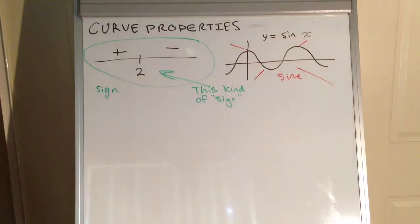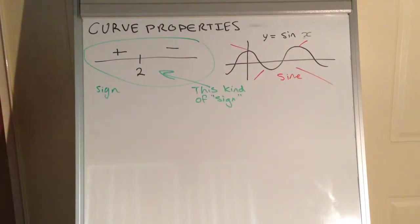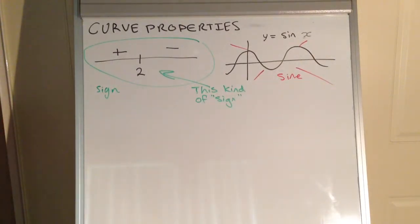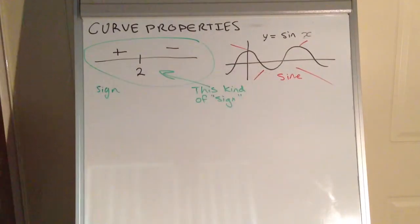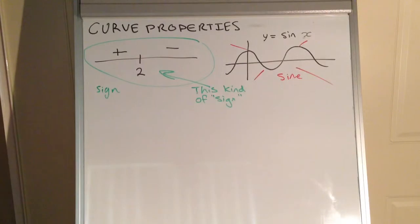Hello everyone. In today's episode we will be looking at curve properties, and this will be spread out over multiple episodes, but we're going to get started on some of the fundamental basics today. We're going to be looking at sign diagrams — that's going to be the main idea behind curve properties. Just to clarify, it's not a trigonometric ratio or value. Let's have a look at some of the fundamental concepts of what happens to the derivative as we go across the curve.